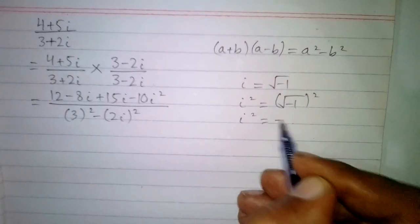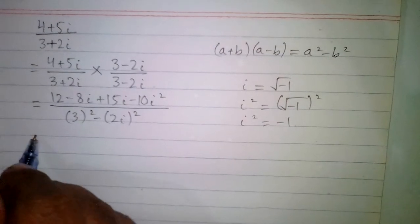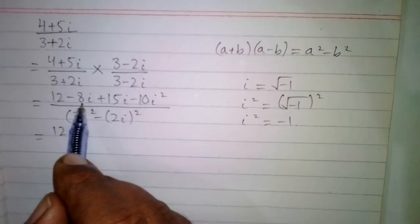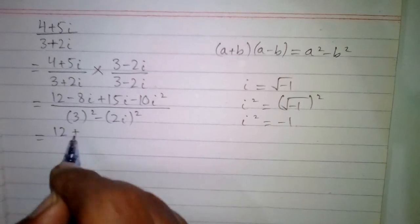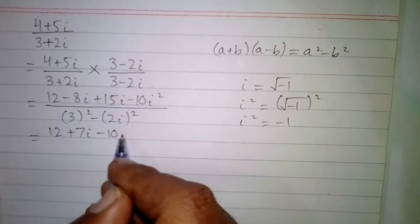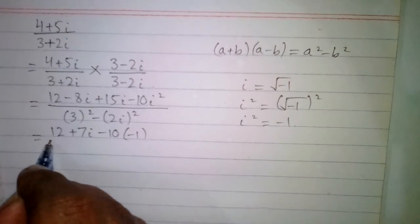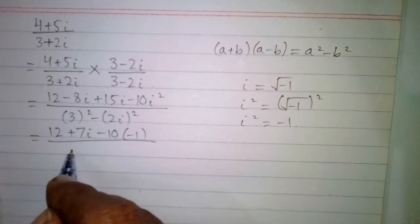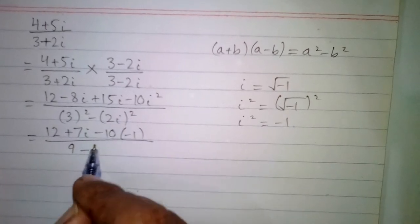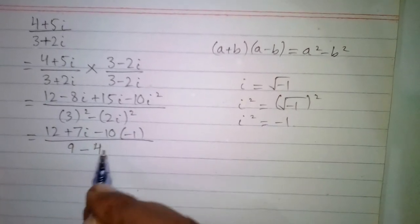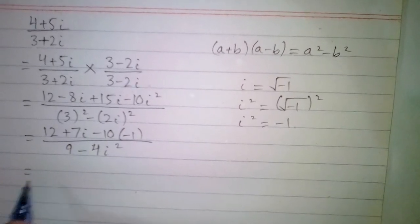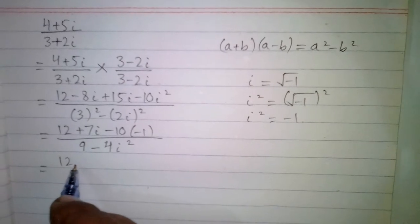Now we have 12 minus 8 iota plus 15 iota, which gives plus 7 iota. Then minus 10 iota squared becomes minus 10 times minus 1. In the denominator, 3 squared is 9, and 2 squared is 4, with iota squared to be substituted.